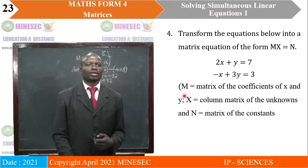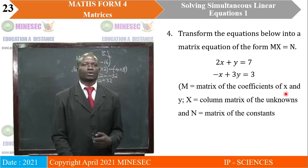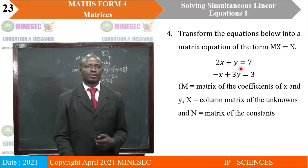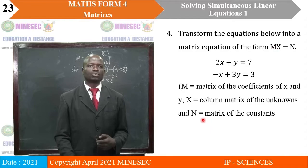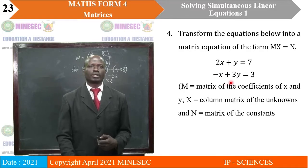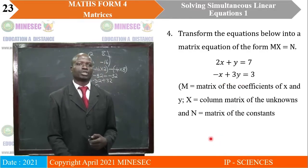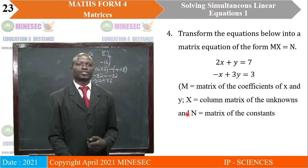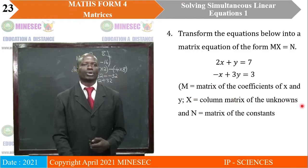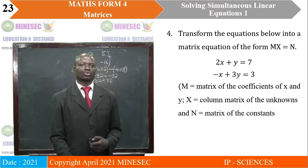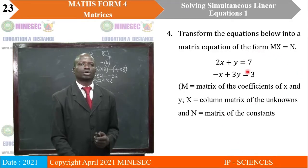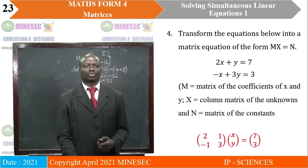Let's analyze it. M will be the matrix of the coefficients of x and y. The coefficient of x is 2, the coefficient of y is 1, so matrix M's first row will be [2, 1]. The second row will have coefficients of x as -1 and y as 3, so [-1, 3]. Matrix X is the column matrix of the unknowns [x; y]. And the last matrix constitutes the two constants. So this is the matrix equation generated.